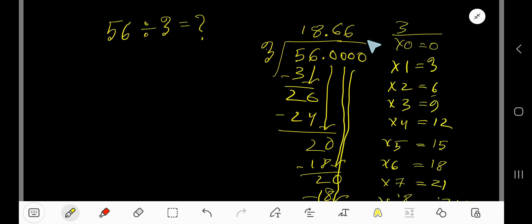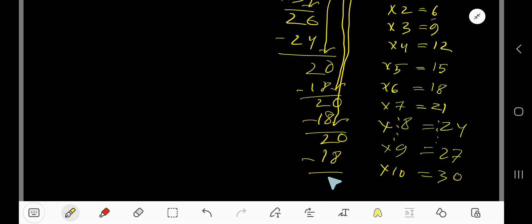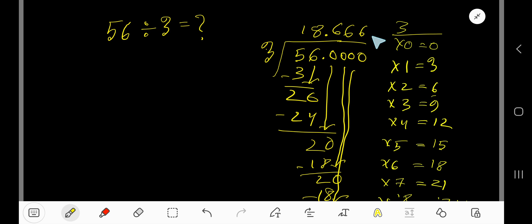3 goes into 20 again, 6 times. 6 times 3 is 18. Subtract 2. So our answer is 18.666 dot dot dot. You can write your answer in another form: just place a bar over 6, so 18.6 bar is your answer. This bar means this 6 is repeating.